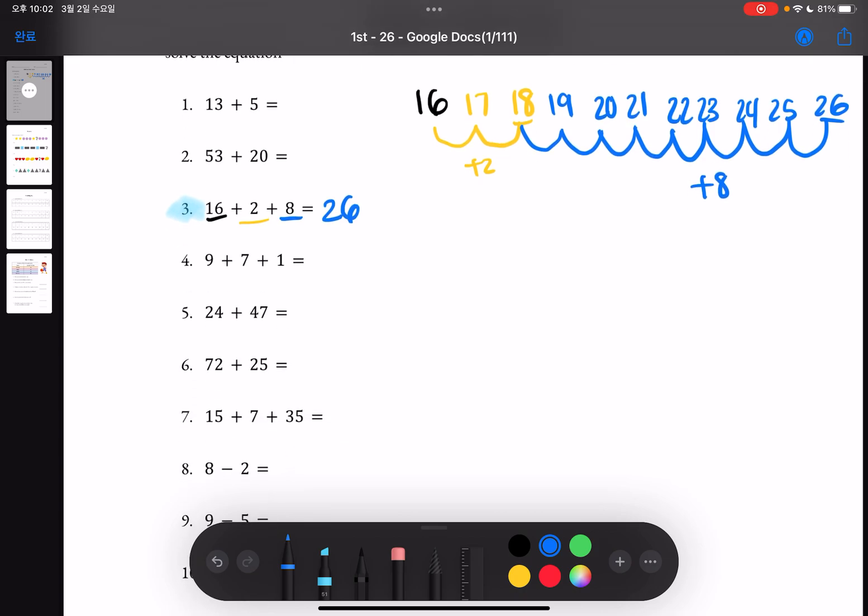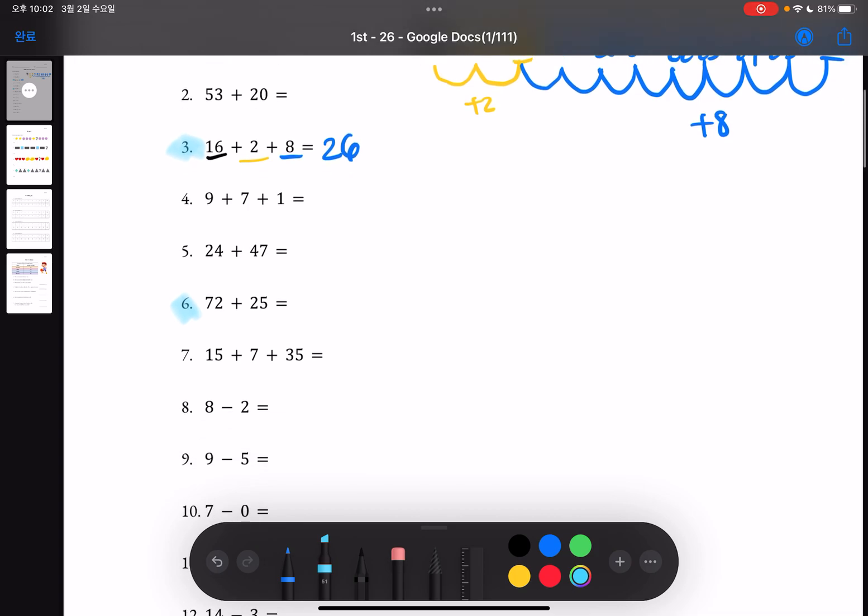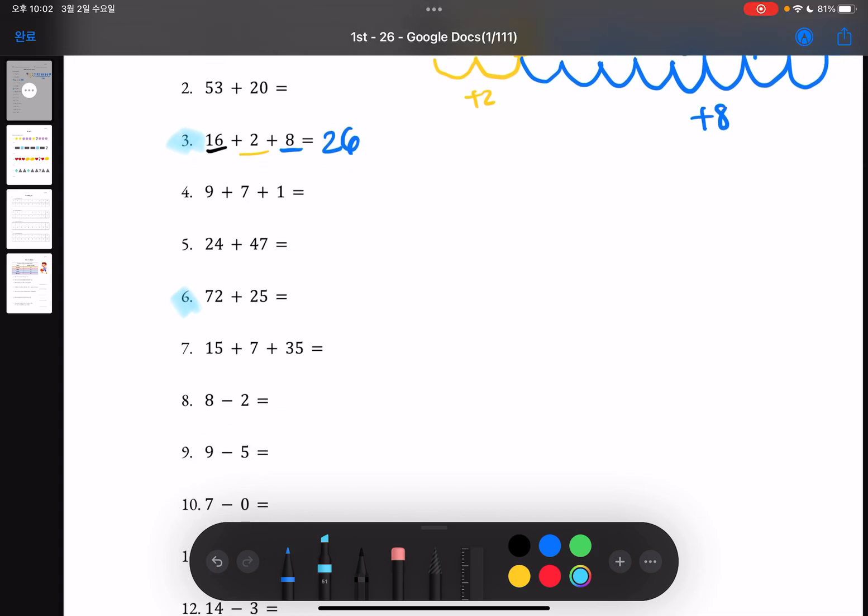Now let's look at number 6. Number 6 says 72 plus 25 and another way you can solve addition problems is by using a vertical addition method. The way you would do this is write the numbers in a vertical way, 72 and 25, and you have to make sure that you line up the numbers by its places. So ones which are 2 and 5 by themselves and 7 and 2 which are tens by themselves.